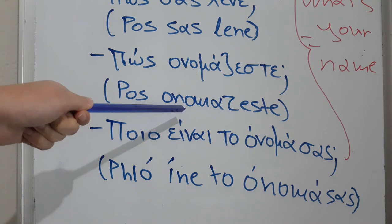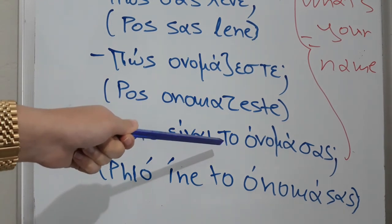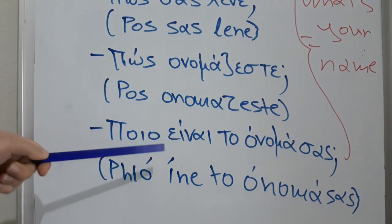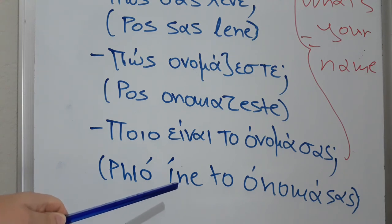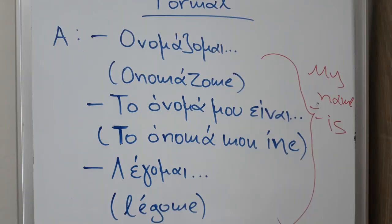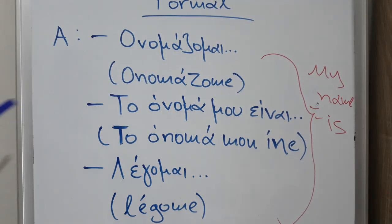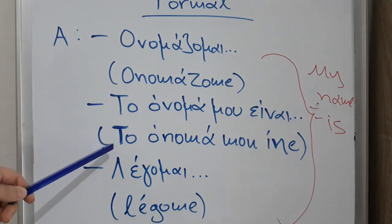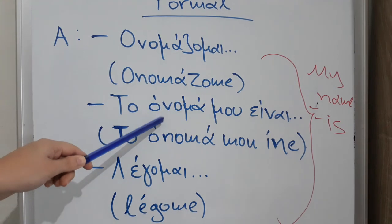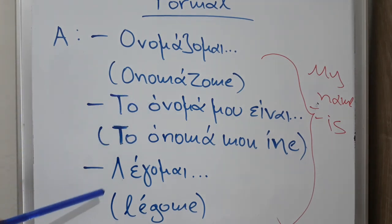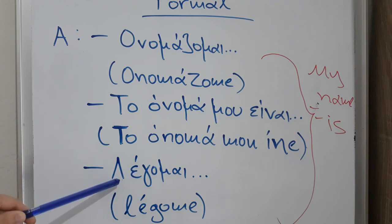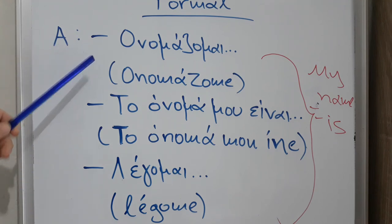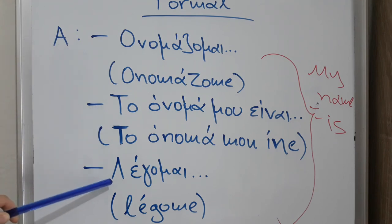The third formal question is πώς ονομάζεστε, and the fourth is ποιο είναι το όνομά σας? In the first case we use the verb ονομάζομαι, and in the second we use the substantive όνομα — name. In formal situations you can answer: ονομάζομαι, or το όνομά μου είναι — my name is — or λέγομαι, using the verb λέω.